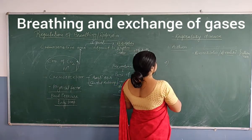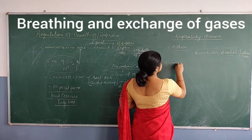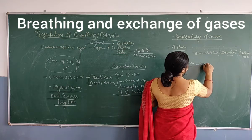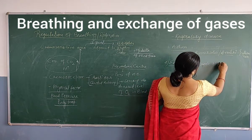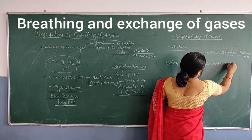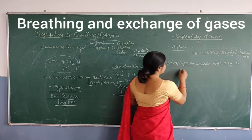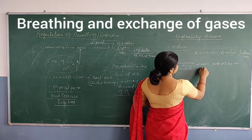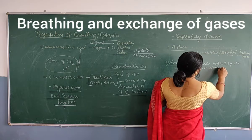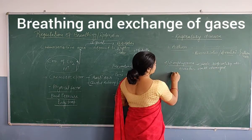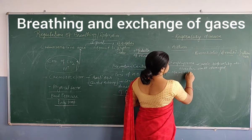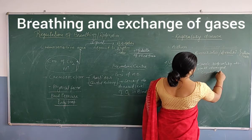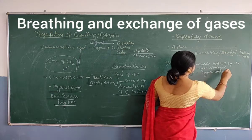The second disorder is emphysema, which is a chronic respiratory disorder. In this condition, the alveolar walls are damaged. The major cause of emphysema is cigarette smoking. This is about emphysema.